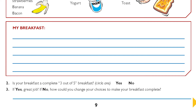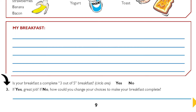This is a perfect place to press pause to give you some time to write out your breakfast. Now let's move on to question number two. Is your breakfast a complete 3 out of 5 breakfast? If yes, mark it with an X. If no, mark it with a no. Question number three: if it is, great job. If no, how could you change your choices to make your breakfast a complete 3 out of 5 food model approved breakfast?